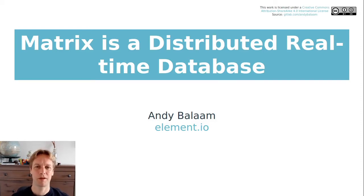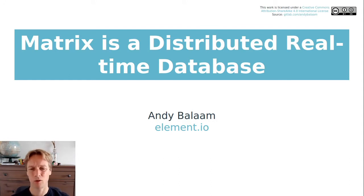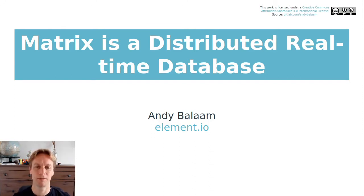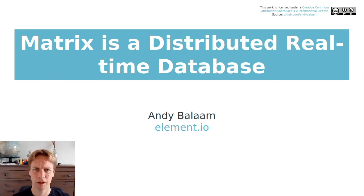Hello, my name is Andy and this is a talk about Matrix, which is a distributed real-time database, most commonly known as a chat system. To make a chat system you have to make a distributed real-time database, which means there's all kinds of amazing stuff you can do with Matrix. We're going to get really deep into technical stuff — the exact HTTP JSON that you send back and forth to send a message — and also talk about wider considerations like how to write a server.